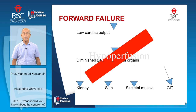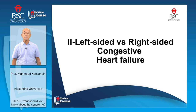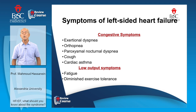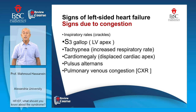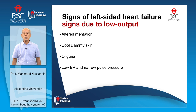Then we have left-sided versus right-sided congestive heart failure. The typical symptoms of left-sided heart failure are exertional dyspnea, orthopnea, paroxysmal nocturnal dyspnea, cough, and cardiac asthma. The low output symptoms are mainly fatigue and diminished exercise tolerance. Signs due to left-sided congestive heart failure are third sound gallop heard mainly over the apex, tachypnea, cardiomegaly, pulsus alternans, and pulmonary venous congestion on radiography. Signs due to low cardiac output are altered mentation, cool clammy skin, oliguria, low blood pressure, and narrow pulse pressure.